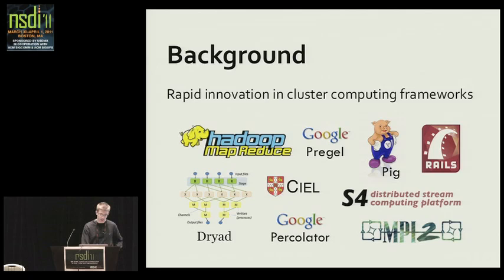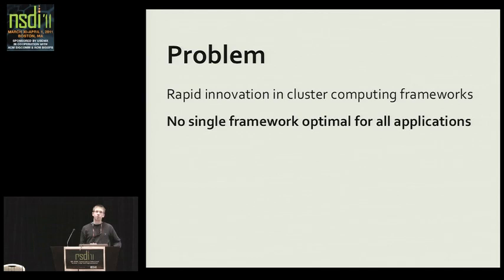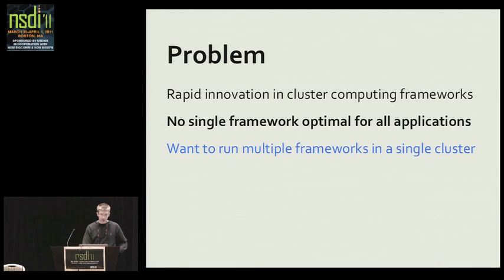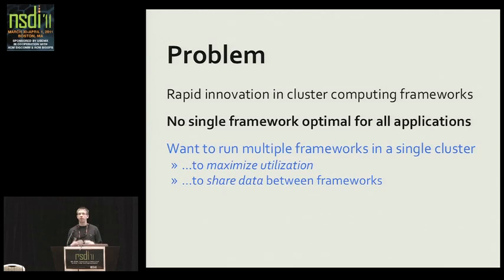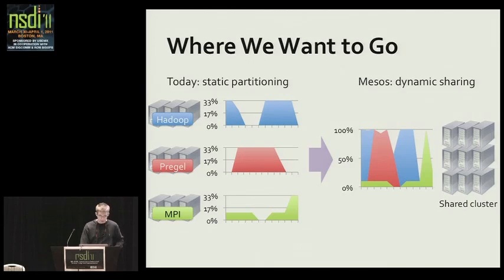The problem we're trying to address is that no single one of these frameworks will be optimal for all data center applications. Organizations really want to be able to run multiple frameworks in the same cluster for two reasons: first, it maximizes utilization — data centers are expensive. Second, big data sets are very costly to replicate, so you don't want a petabyte data set for MapReduce and then copy it for Pregel to a separate cluster. You'd much rather have these things coexist in the same cluster with access to the same storage nodes.